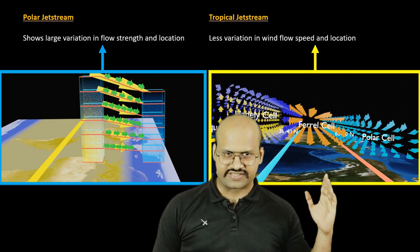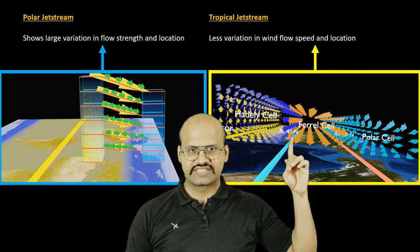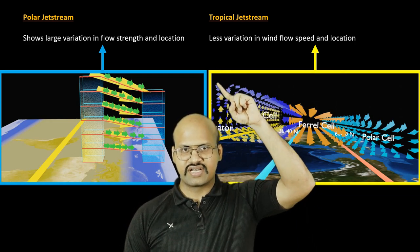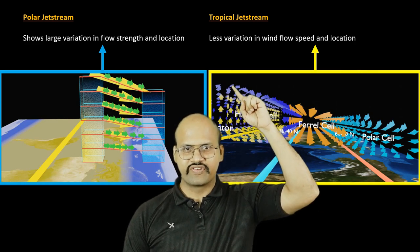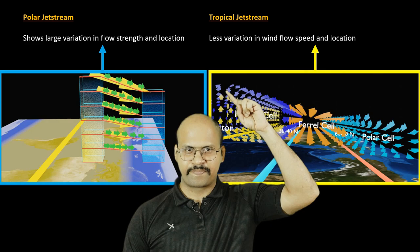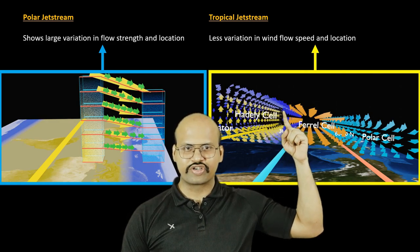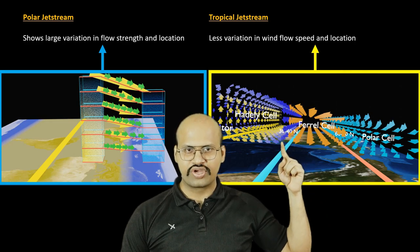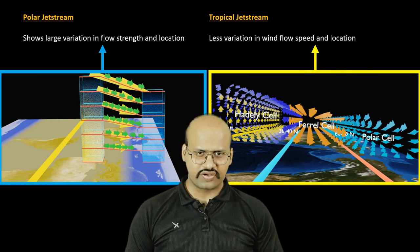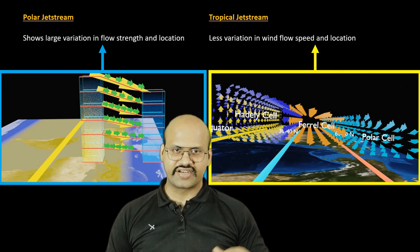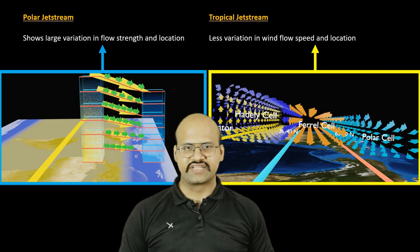However, the tropical jet stream is created due to circulation of air. In the Hadley cell, there is a collection of air because the air is rising up, and therefore here we find high pressure. Where the air descends, in the upper atmosphere there is low pressure because air is descending and going downwards, causing a depletion of air. Because of this, a pressure gradient exists in the upper atmosphere, leading to the formation of tropical jet streams.